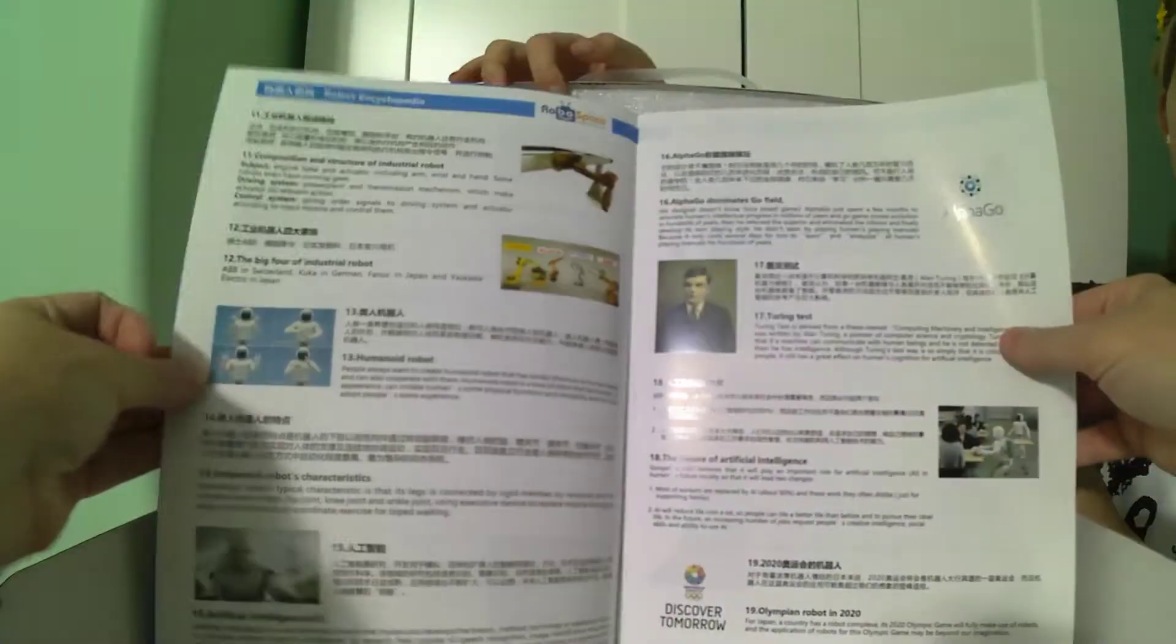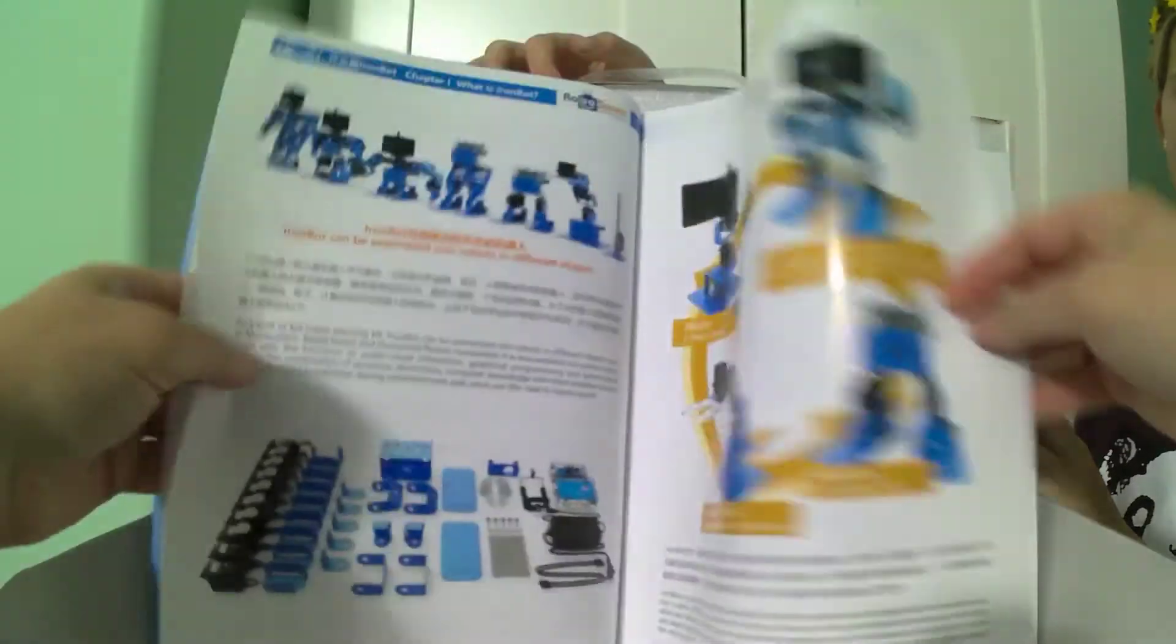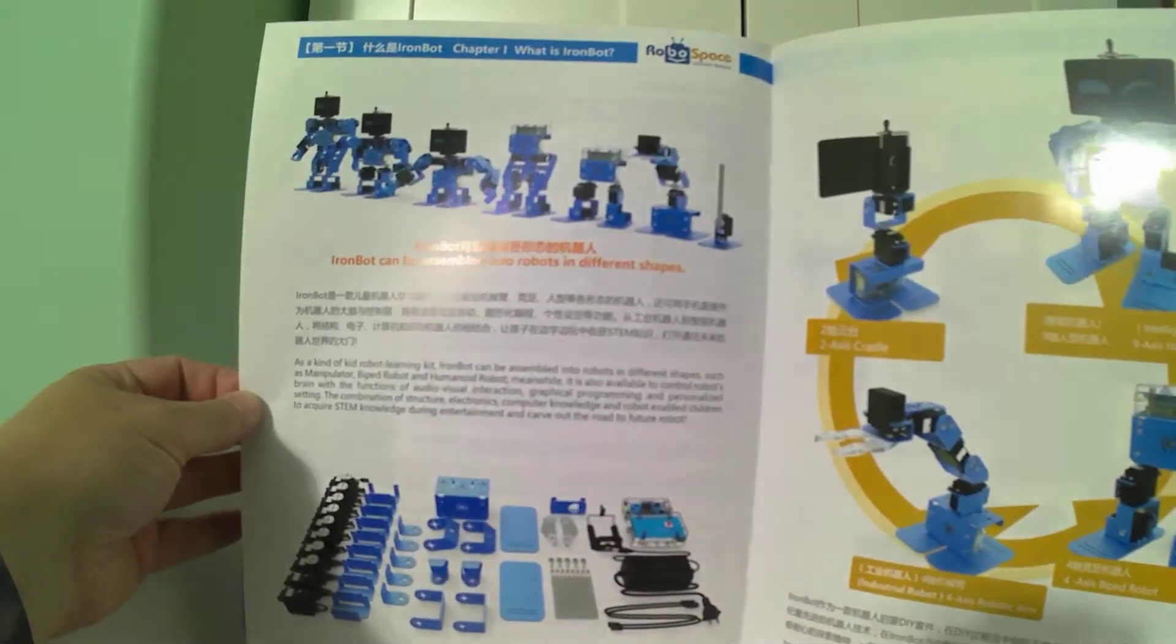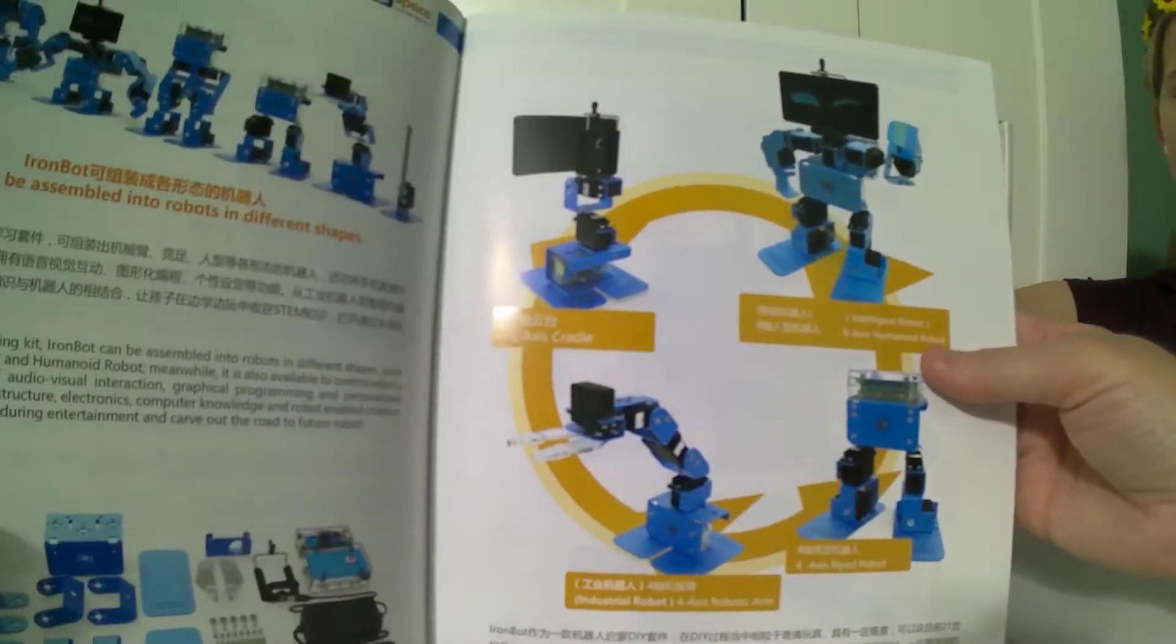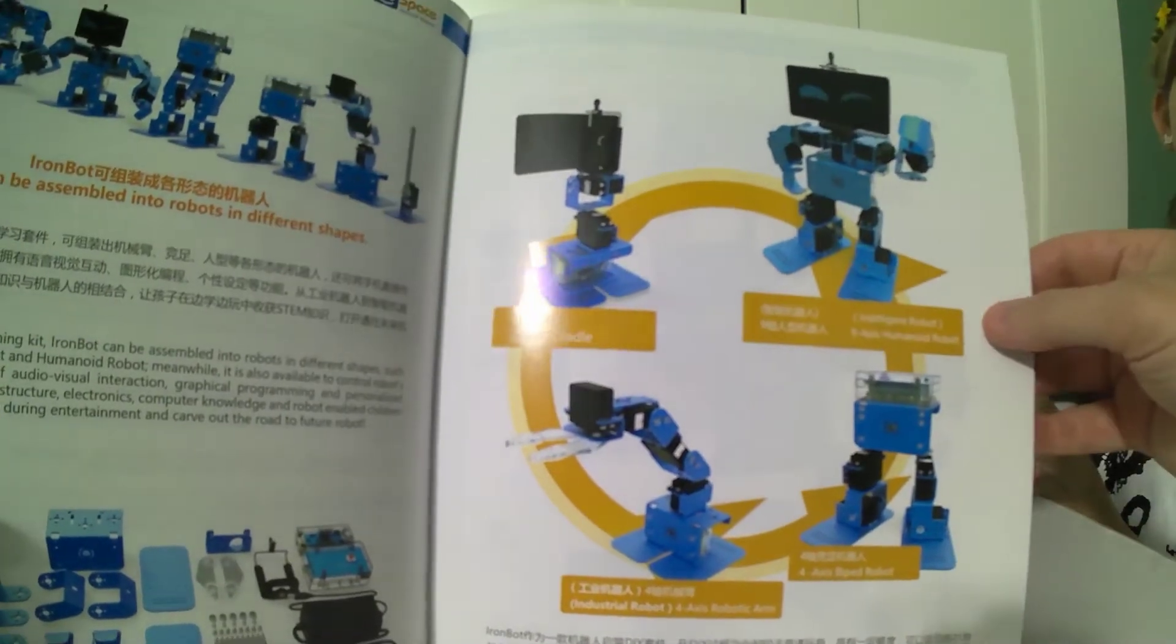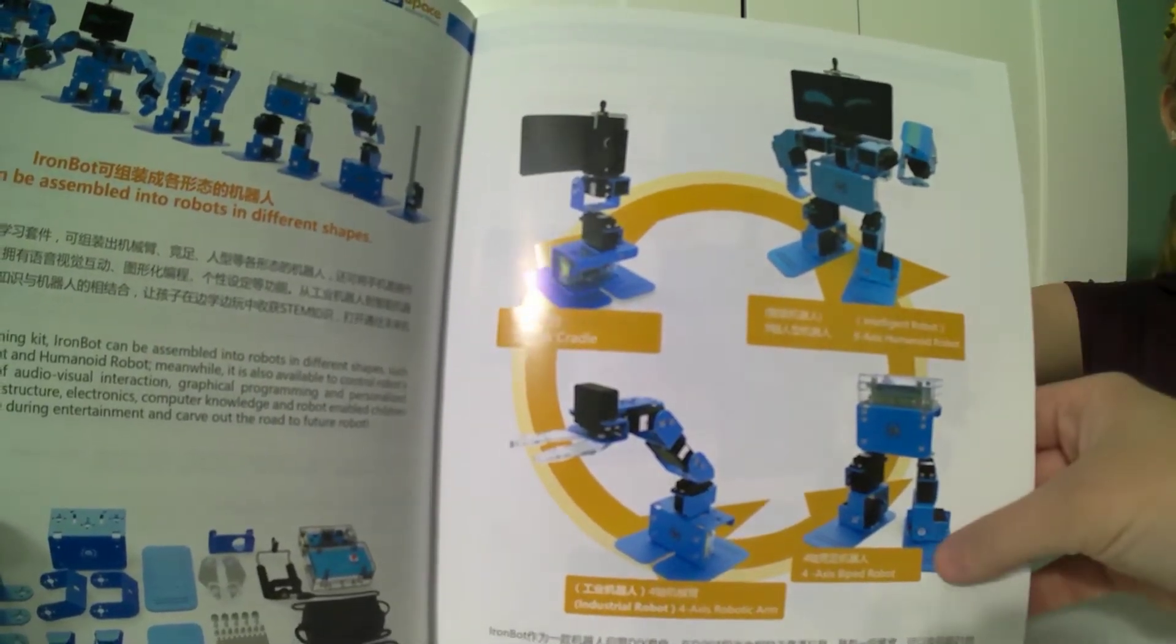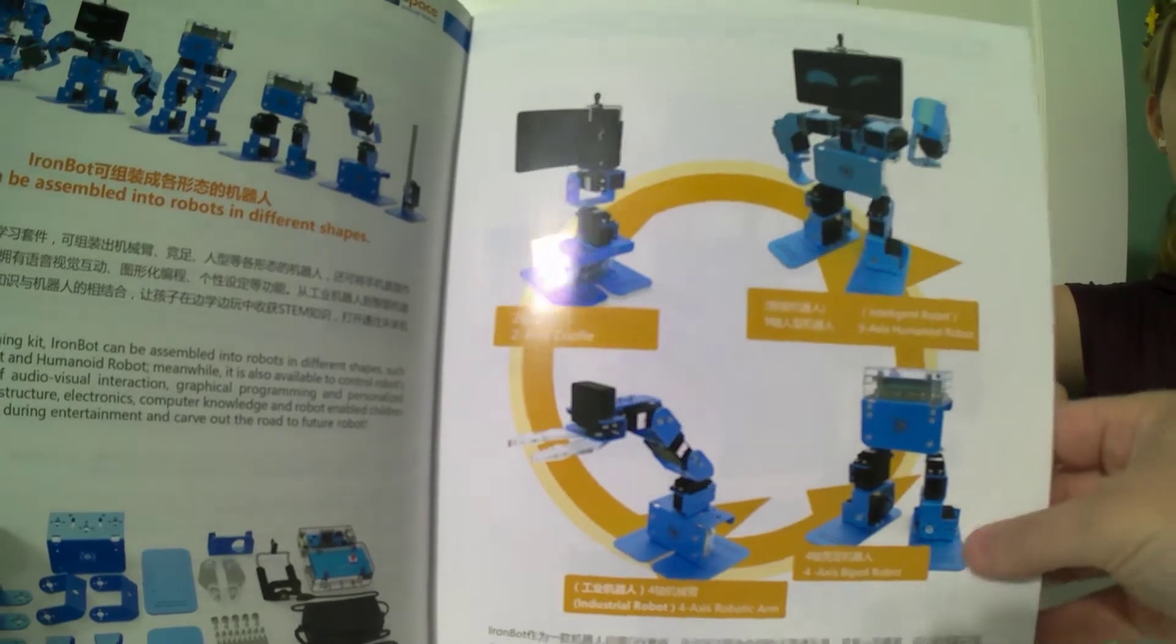We've got some information on what IronBot can do in the different modes. You can have it as a two-axis cradle, you can make it a humanoid, you can do a biped, and you can do an industrial arm.